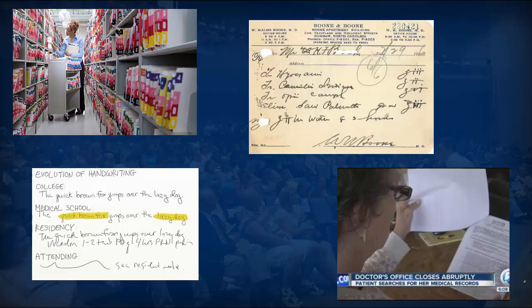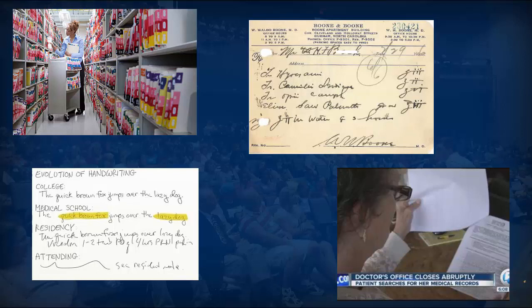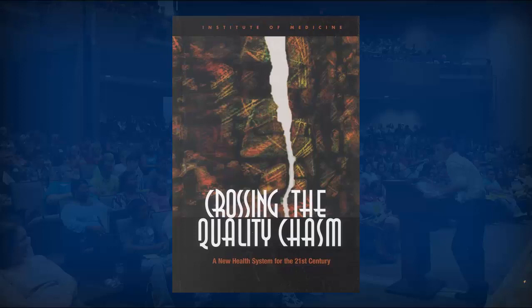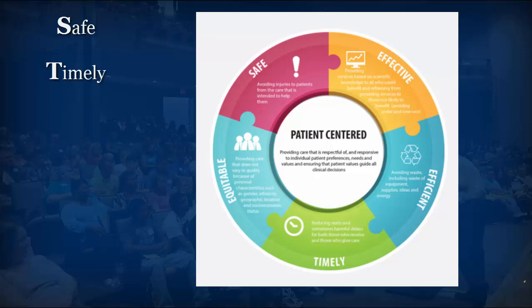What also facilitated this was a report from the Institute of Medicine, the IOM, called Crossing the Quality Chasm. The IOM said there are six things patients want in their healthcare, using the acronym STEEEP to remember them: patients want care that is Safe, Timely, Efficient, Equitable, Effective, and Patient-centered. Just like all of us, we want and expect these things in our healthcare.